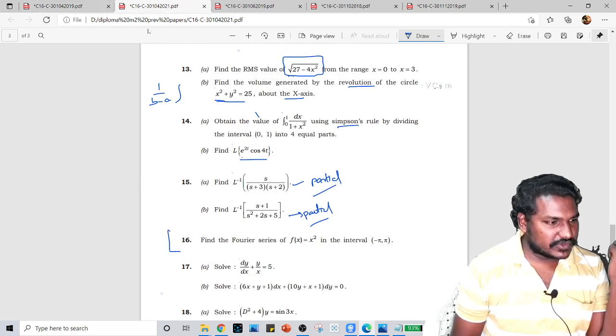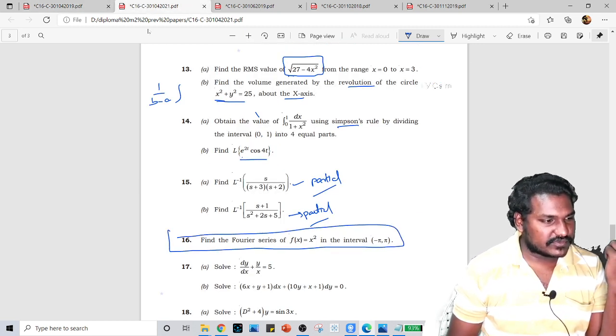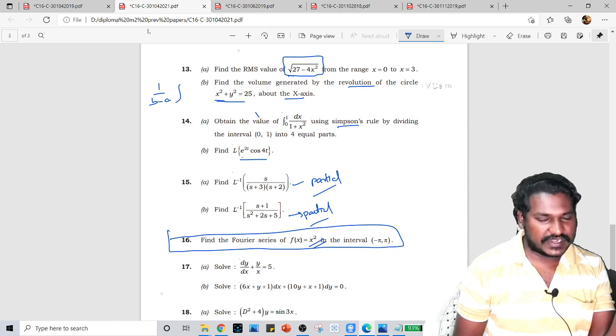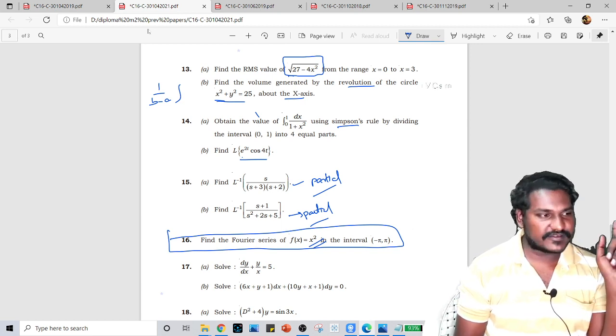Alright, so here we have one question. Find the Fourier series of x square. This question is interesting, find the Fourier series of f(x) is equal to x square. So, damn sure, 10 marks guarantee, you can do it.